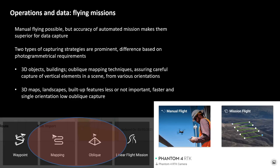To start with operations and data — flying missions. With drones, manual flying is possible, but the accuracy of automated missions makes them superior for data capture. There are basically two types of capturing strategies which are prominent, and their differences are based on photogrammetrical requirements. For example, if you want to make a 3D model of a standing structure, you want equal coverage of photos on all sides of that structure, which requires more oblique photographs.